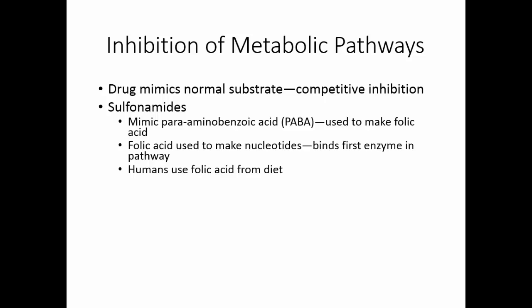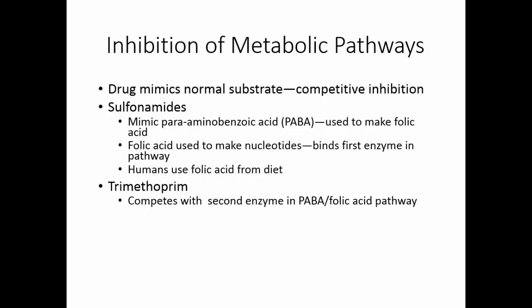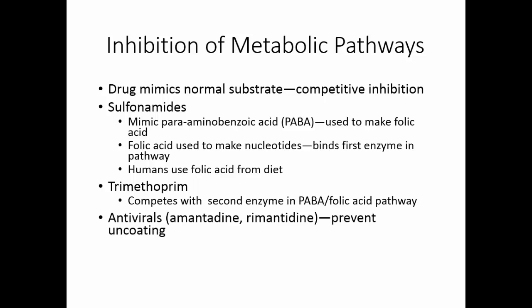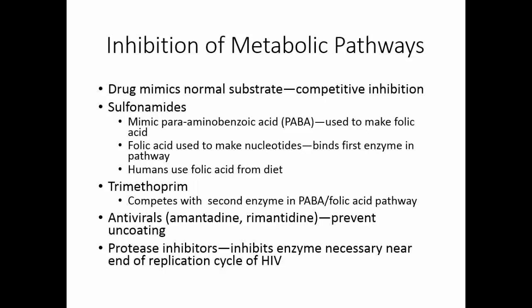We can't manufacture our own folic acid, so we're not affected by sulfonamides. Trimethoprim also competes with the para-aminobenzoic acid/folic acid pathway, but this one binds to the second enzyme in the pathway. Antivirals like amantadine and rimantadine prevent the uncoating of the virus inside the cell. Protease inhibitors inhibit an enzyme that's necessary near the end of the replication cycle in HIV.